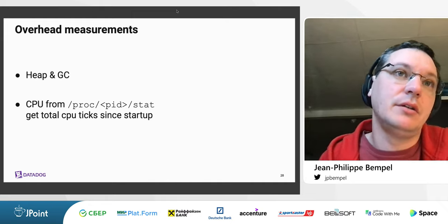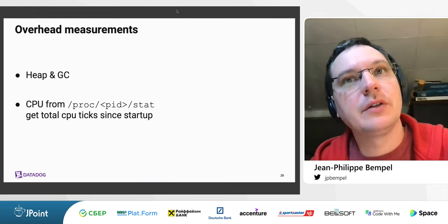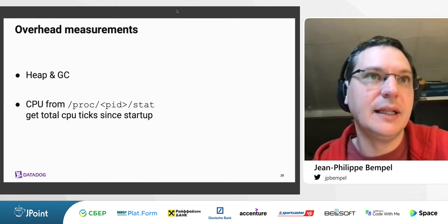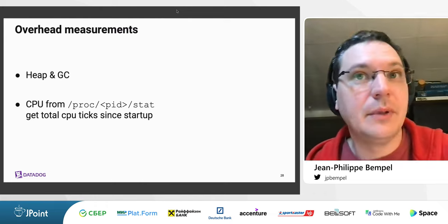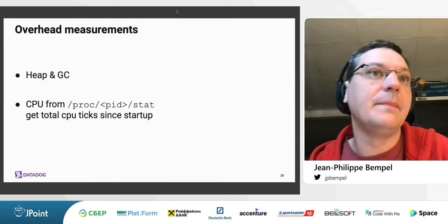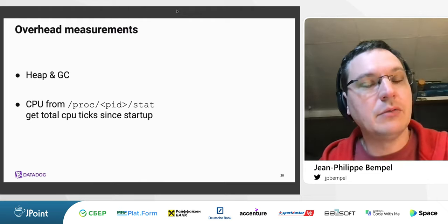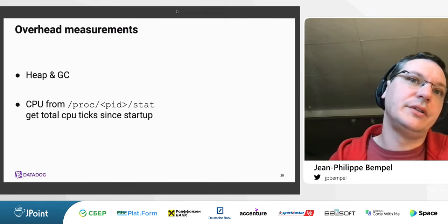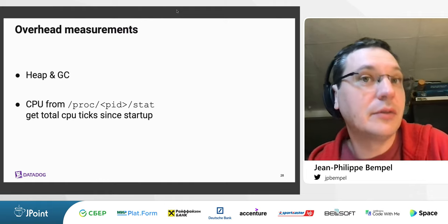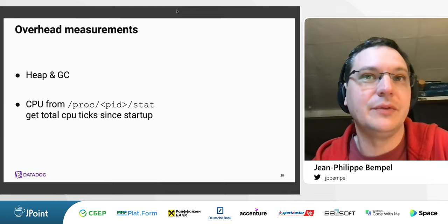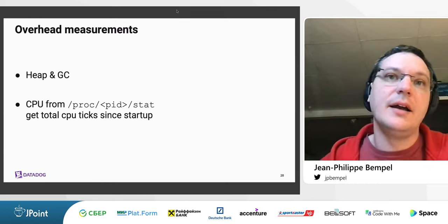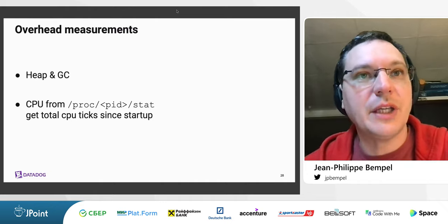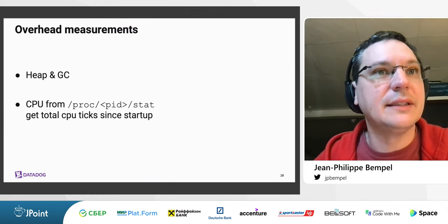For the measurement we measured memory usage and GC, but also CPU through the /proc filesystem. From the stat file you can obtain the total number of CPU ticks since the process started — better than having an average CPU load over time, making comparison easier by comparing a single number at the end. This measurement includes startup and warm-up time, but if you run long enough you can modulate this. Measuring startup can also be useful since some customers report long startup times that affect their health checks, especially when deploying on Kubernetes.